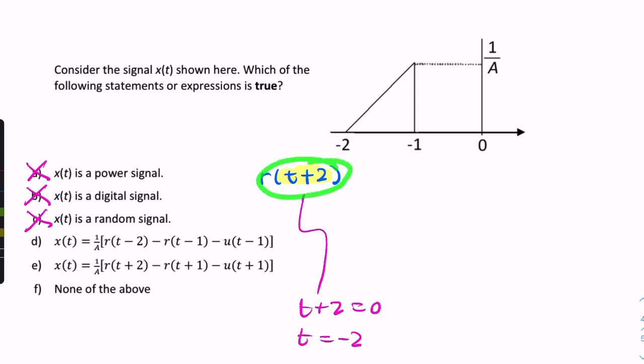You see, r of t plus two will have a slope of one, a gradient of one. But the gradient here, although it looks like it's one, it isn't necessarily one, because you have a rise of one over a, a change in amplitude from zero to one over a in a period of one second.